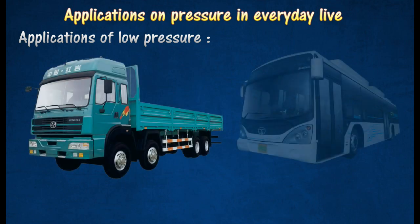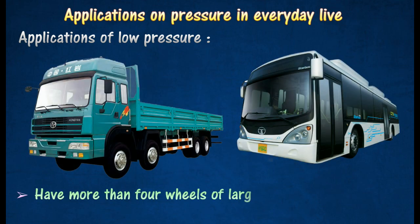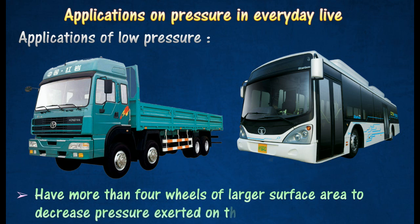Heavy lorries and buses are usually fitted with more than four wheels of larger surface area to decrease pressure exerted on the road. This can prevent the tires from bursting and sinking into soft ground.